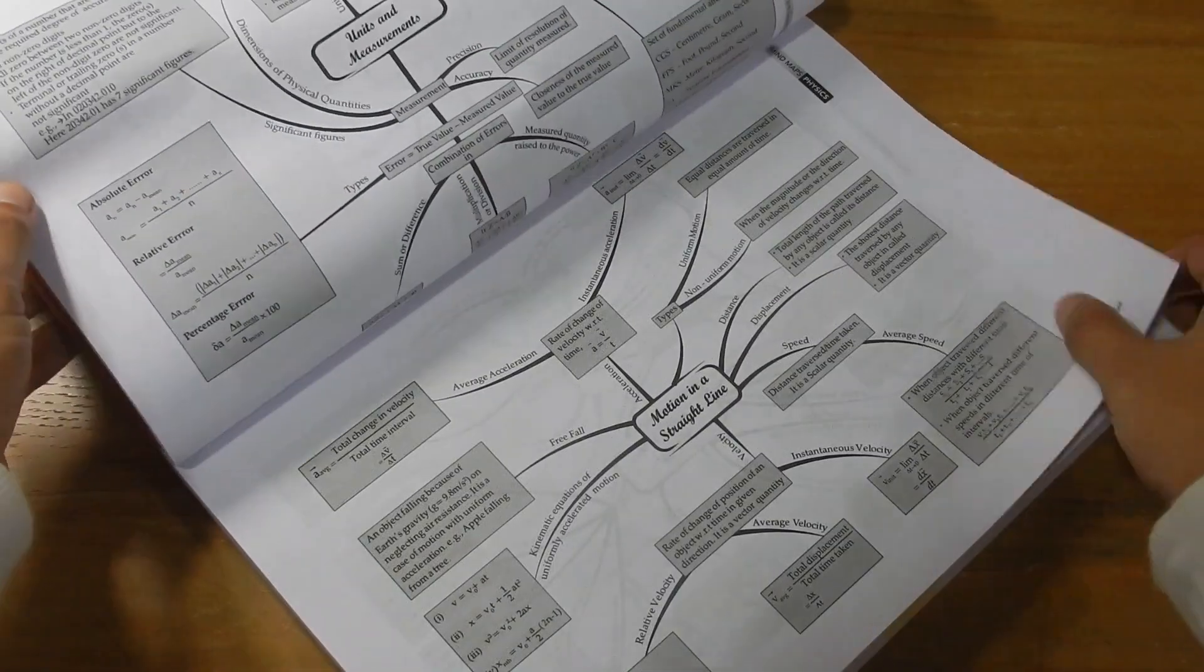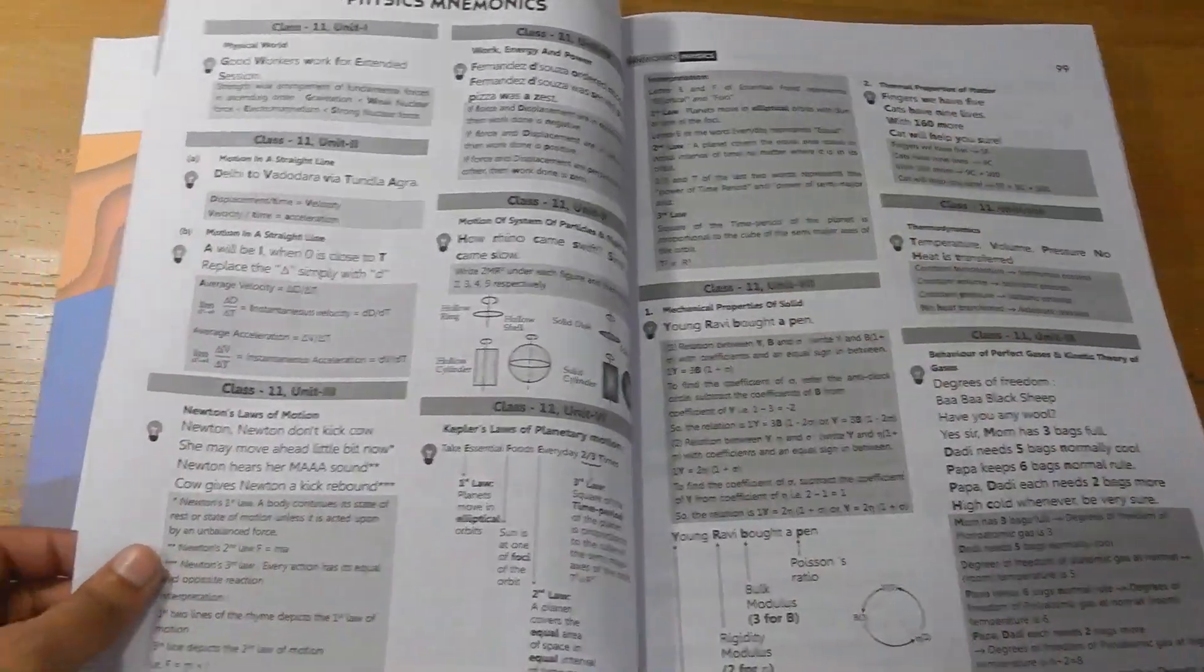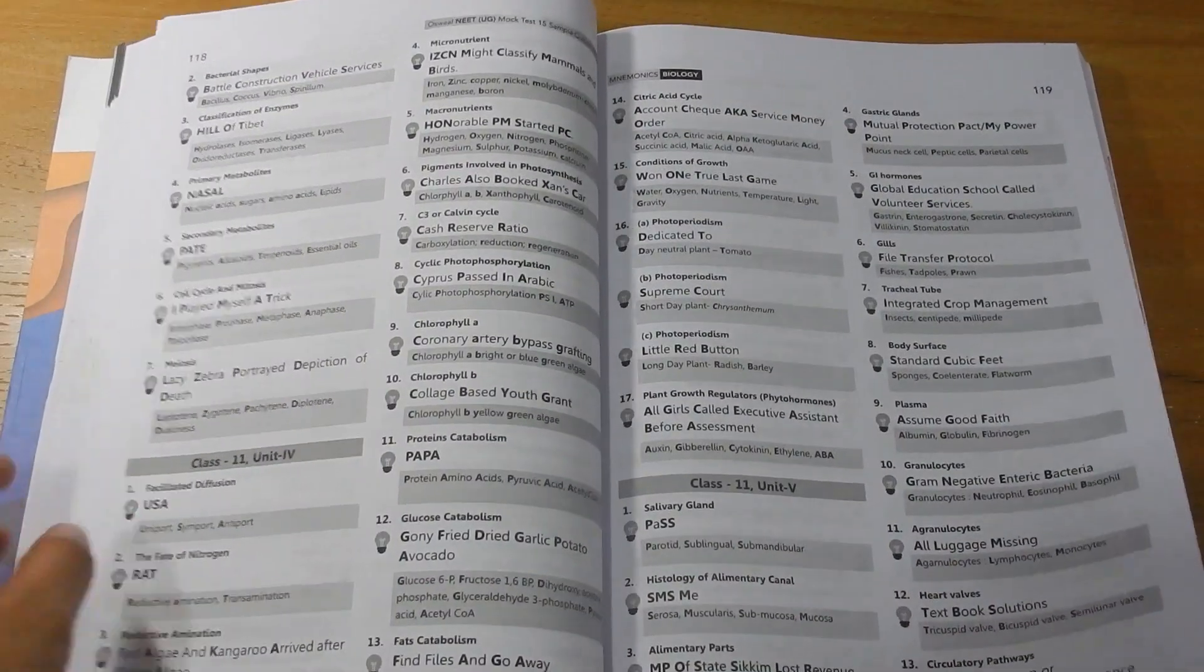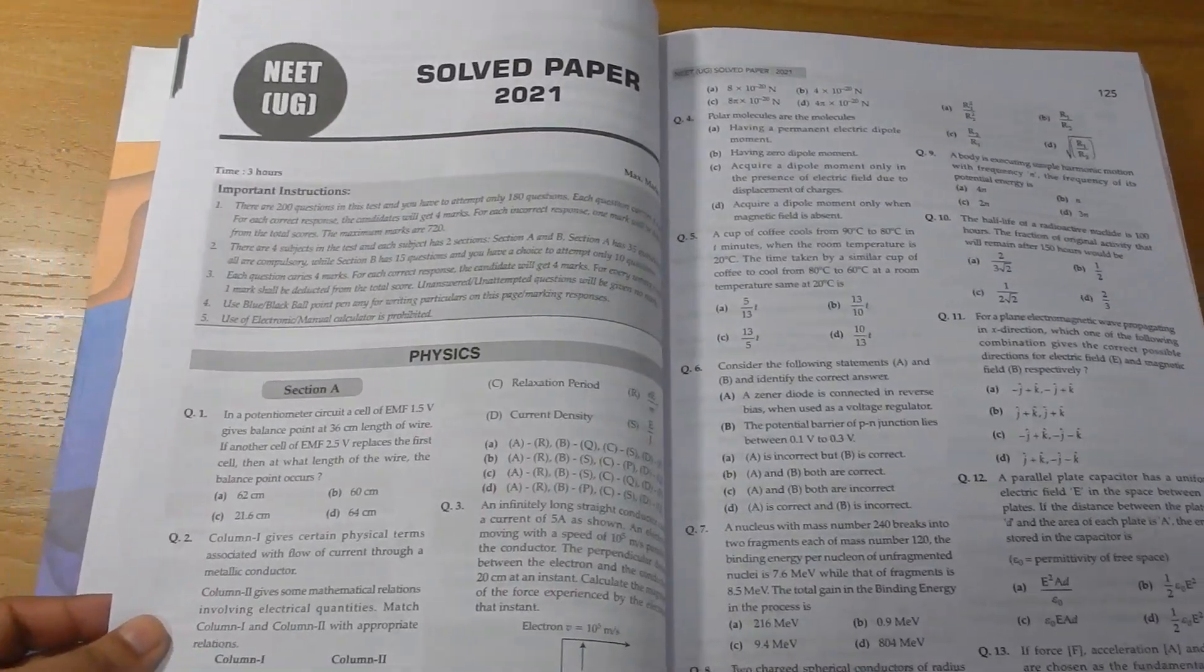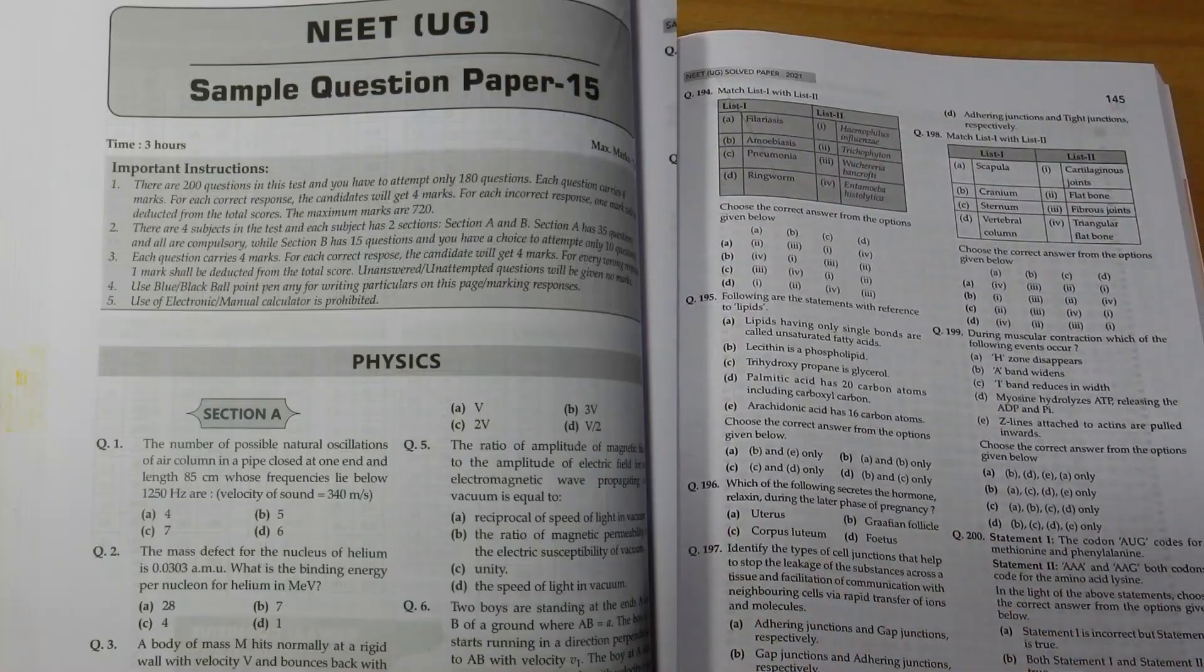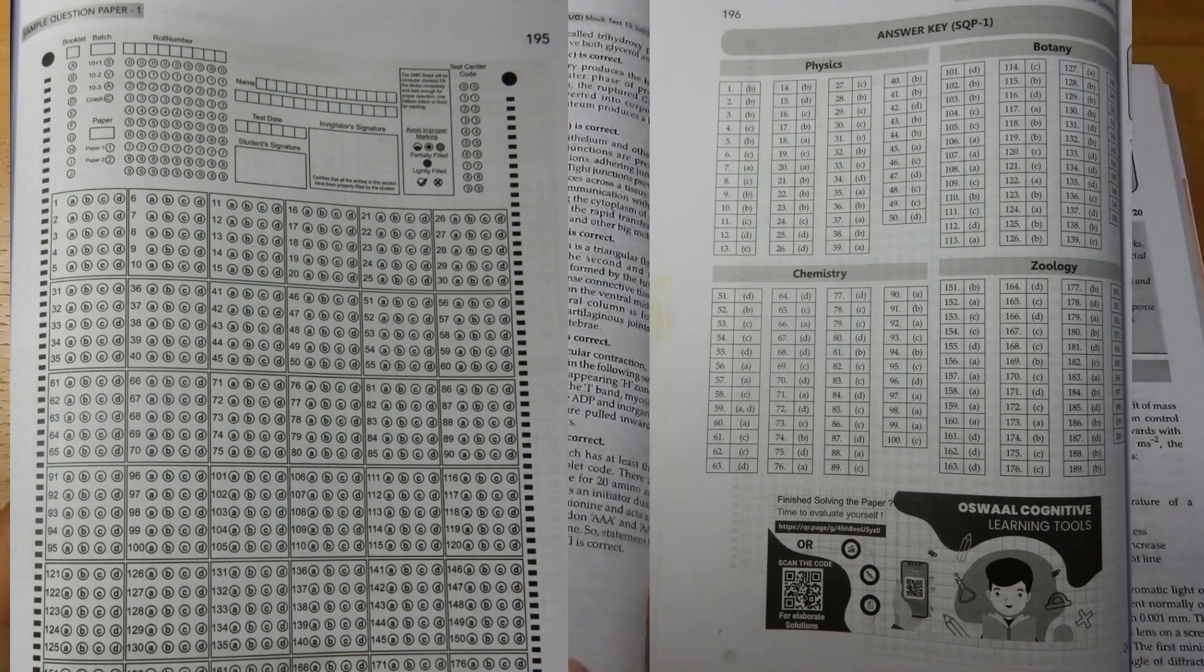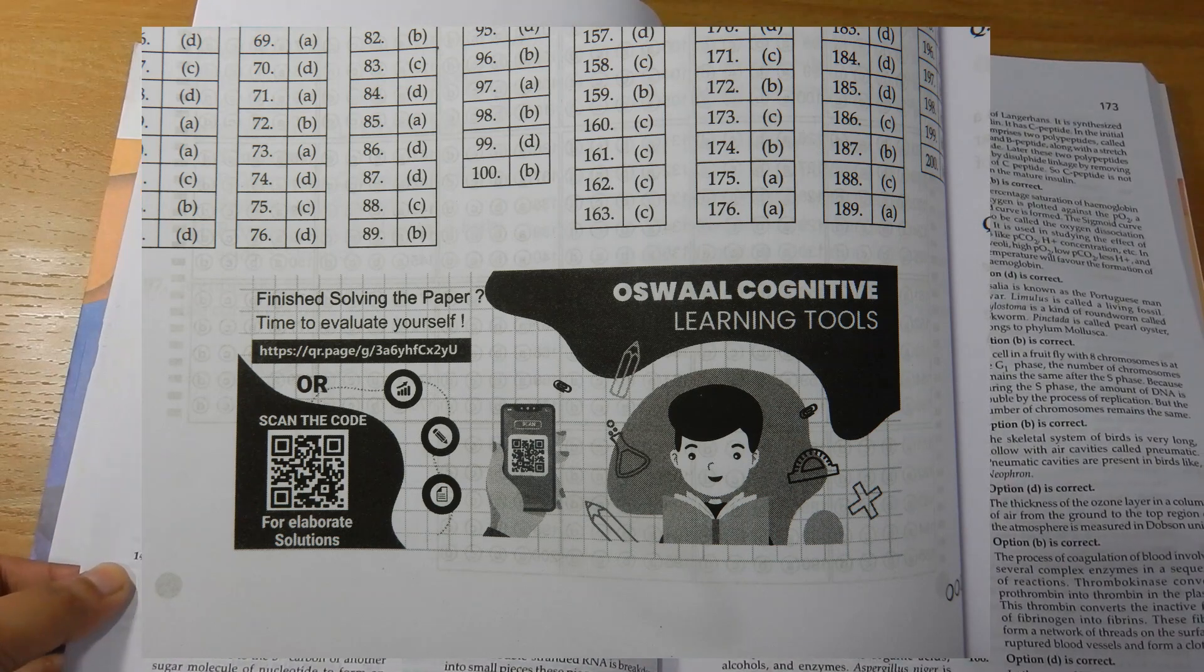These mnemonics will help you boost your memory and confidence. Then you'll get fully solved 15 sample question papers as per the latest pattern of 2023 for physics, chemistry and bio, along with OMR sheets and answer keys. These QR codes will help you get elaborate solutions with detailed explanation of each question.